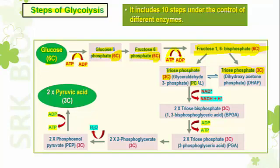These are called triose phosphates. One is PGAL — phosphoglyceraldehyde, also called glyceraldehyde-3-phosphate. The other is DHAP — dihydroxyacetone phosphate. Both are triose phosphate molecules containing 3 carbon atoms. The reaction is catalyzed by the enzyme aldolase. PGAL and DHAP are interconvertible.